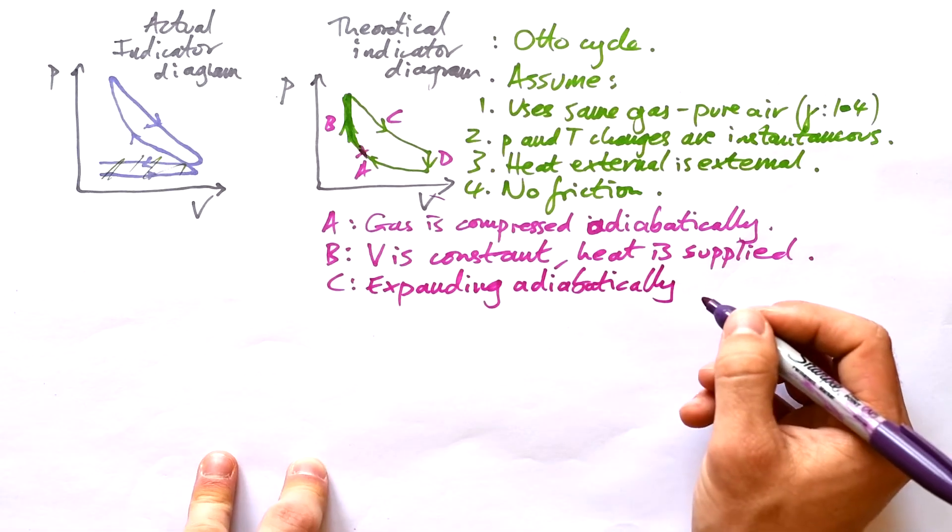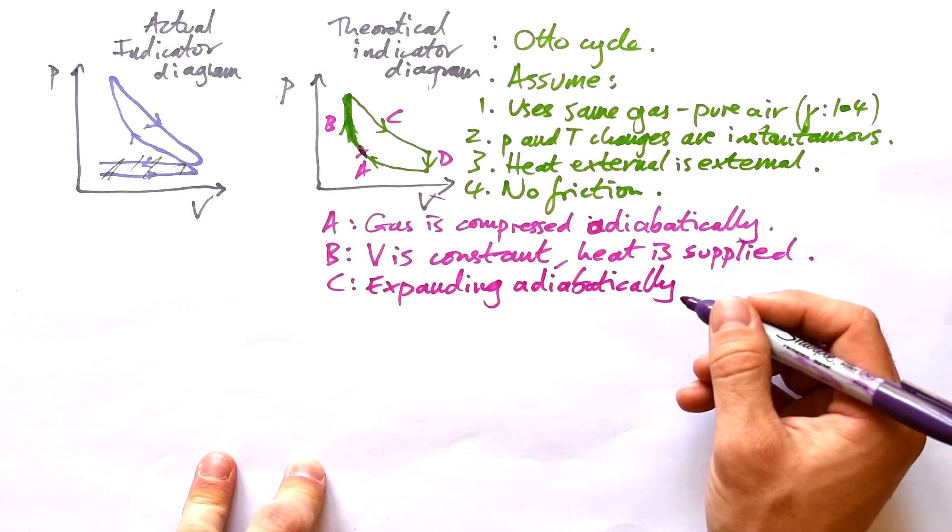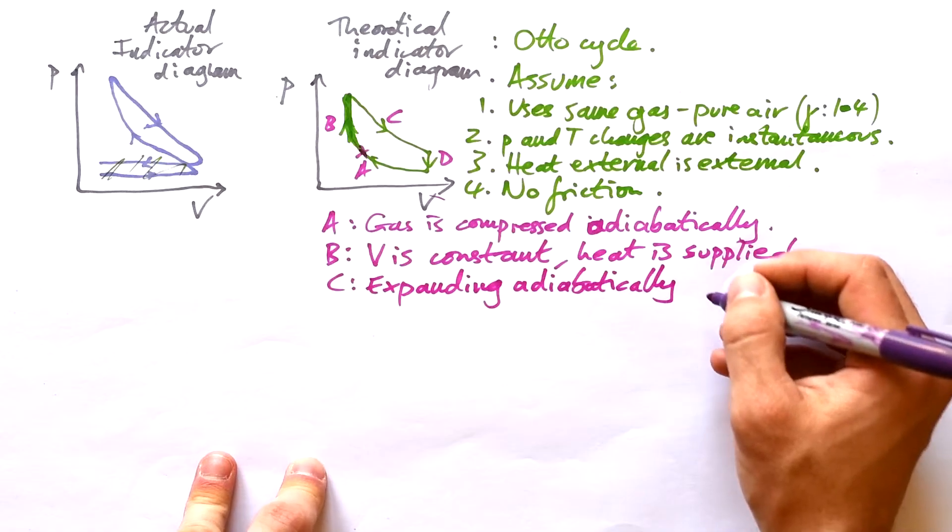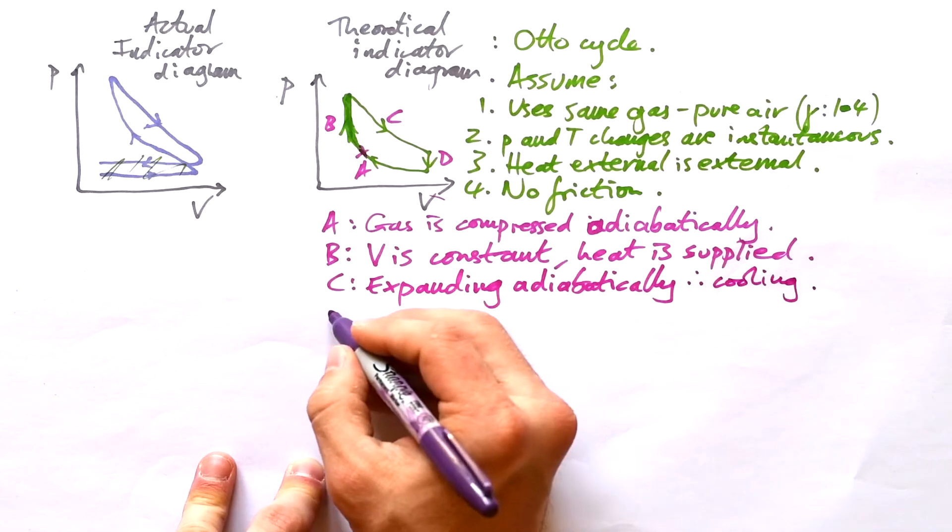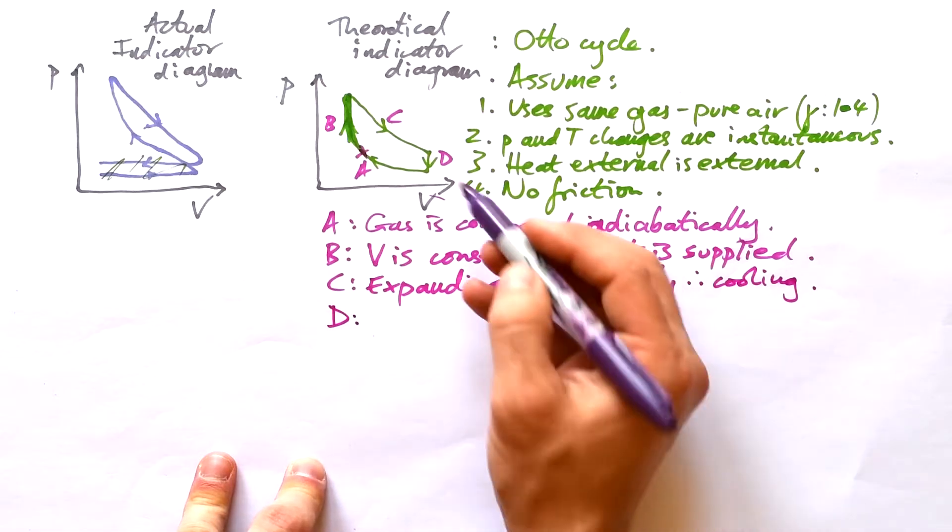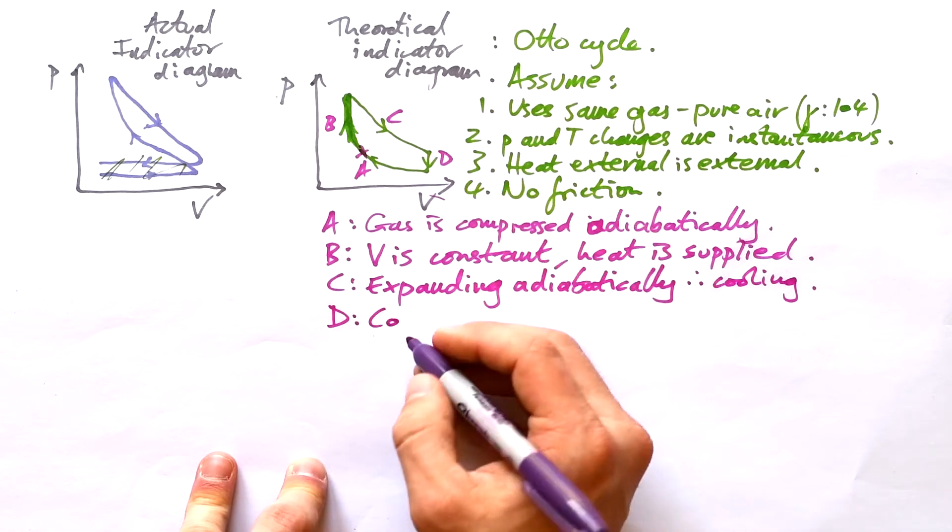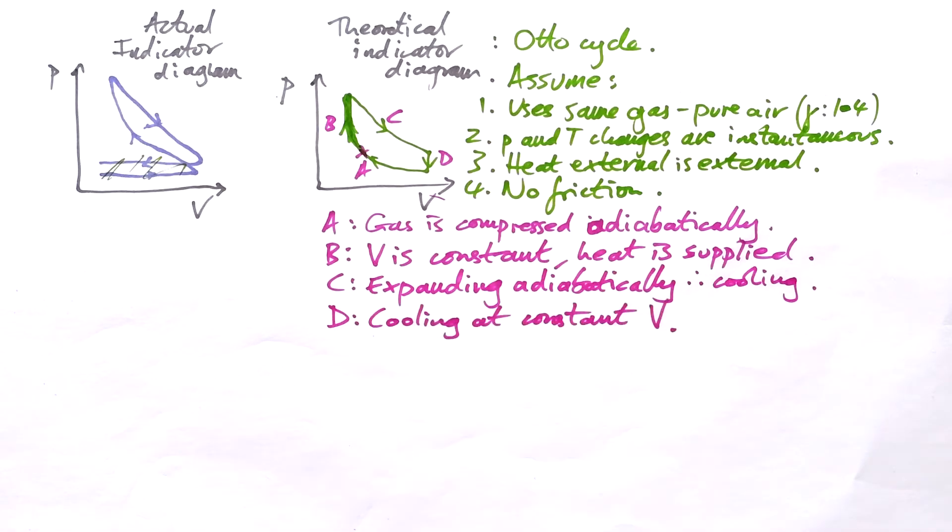C, the gas is expanding. It's expanding adiabatically. So if that's true, then we know that Q is zero. So that must mean that the internal energy of the gas is going down as well. Therefore, cooling adiabatically. And then finally, D is cooling here at a constant volume. And then the whole process starts again.